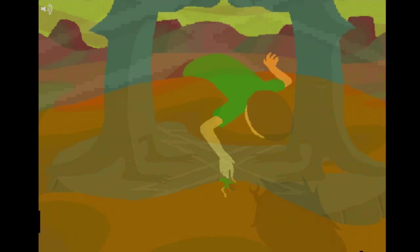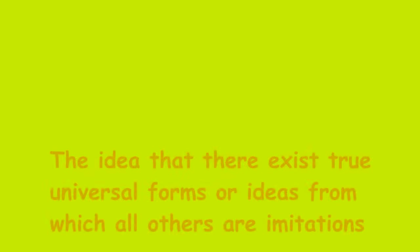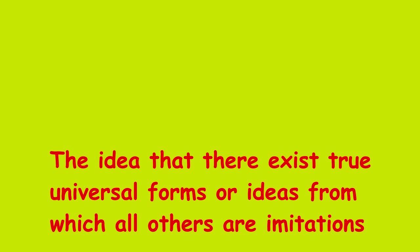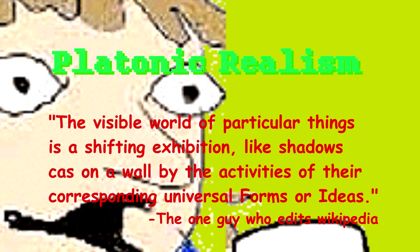You might find yourself asking, who decides what this true form is? Is there some supreme being somewhere that decides it for everyone? This is an excellent question, but we're going to leave it on the back burner and come back to it in another video. This idea that there is some higher plane of reality in which there exist true universal blueprints for all the things we experience is called the theory of forms, and it's part of a more general theory known as platonic realism.